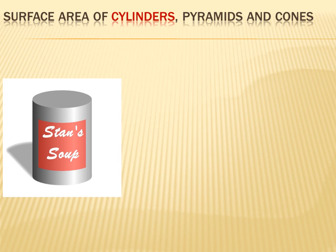Today we're going to figure out how to get the surface area of cylinders, pyramids, and cones. Let's start with a cylinder. A cylinder, again, is like a can — like this can of soup. You can see that there are really three components: there's a top, there's a bottom underneath, and there's a lateral side that runs around the two bases at the top and the bottom.